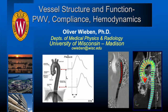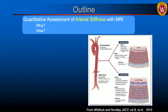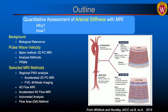Thank you for the introduction and thank you to the organizers for providing me an opportunity to talk on this topic. I will be talking about assessments of arterial stiffness with quantitative MRI, with a focus on pulse wave velocity measures. By the end of the talk, I hope you understand why you might want to do that and how you would do that. I want to cover the biological relevance, the basic method for pulse wave velocity assessment with 2D phase contrast MRI, and the analysis methods used to derive these measures, potential pitfalls, and selected MRI methods to improve on the basic processing.